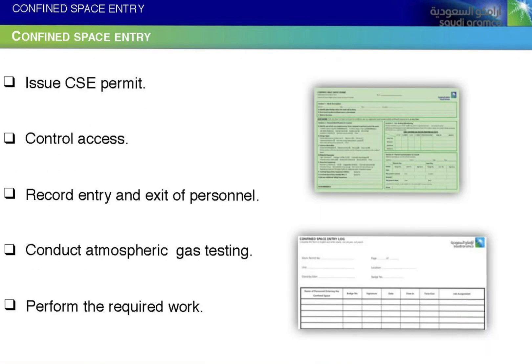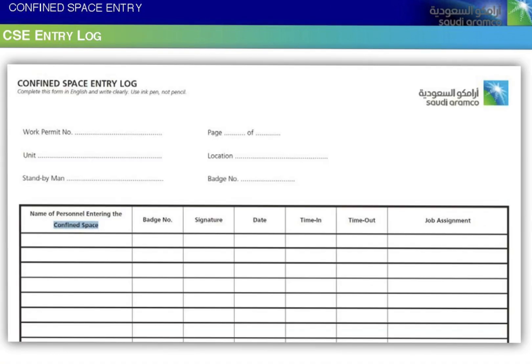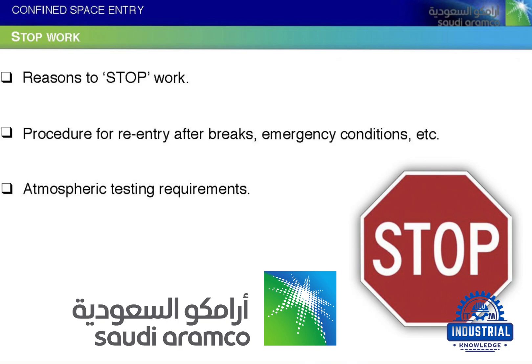During confined space entry: issue the CSE permit; control access; record entry and exit of all personnel; conduct atmospheric gas testing; and perform the required work. Stop work reasons and procedures must be established, including the procedure for re-entry after breaks, emergency conditions, and atmospheric testing requirements.